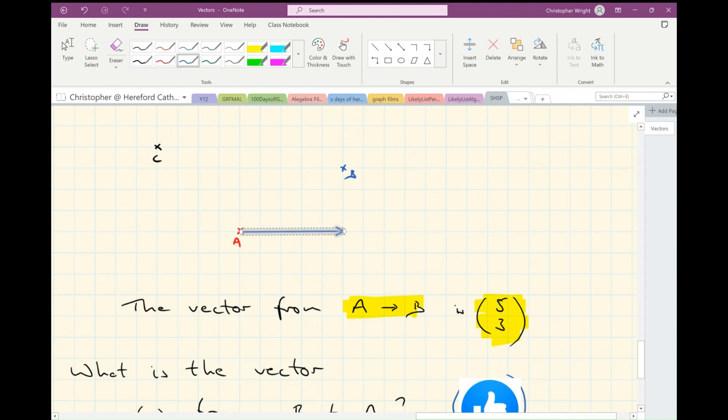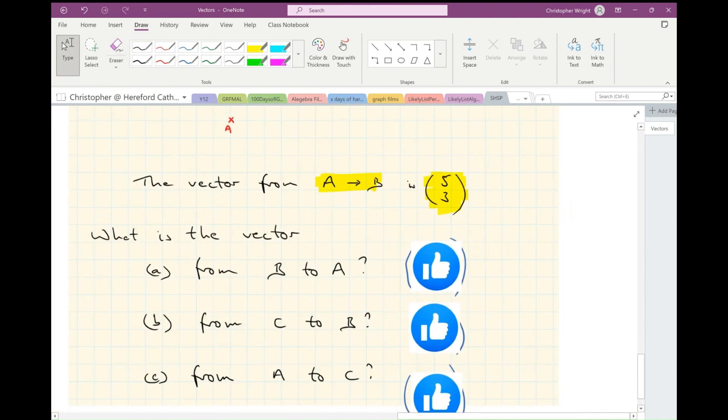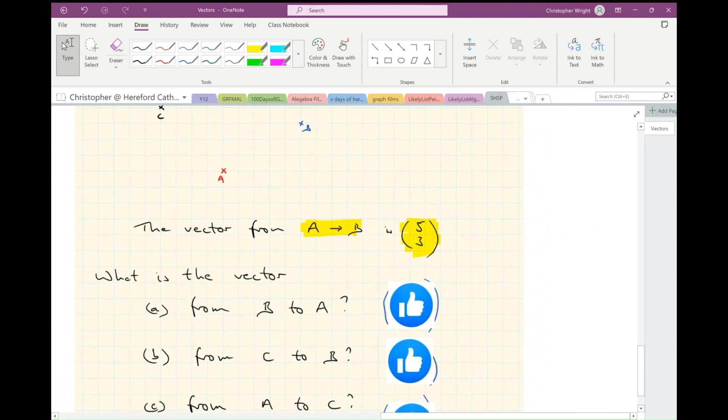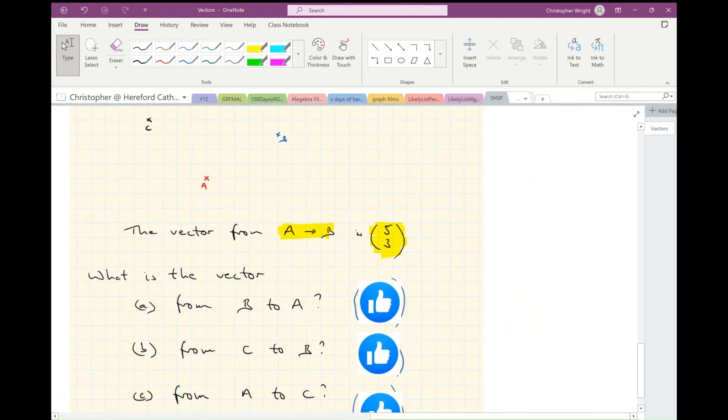From A to B, I go five along and then three up, so (5, 3) is the vector from A to B. You're asked for three vectors here. If you pause the film now, you can have a go at those three and then play the film to see if we agree.